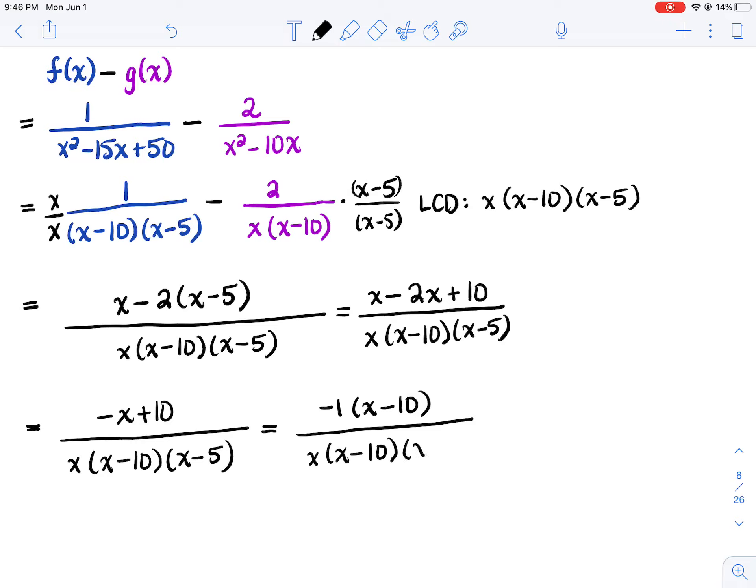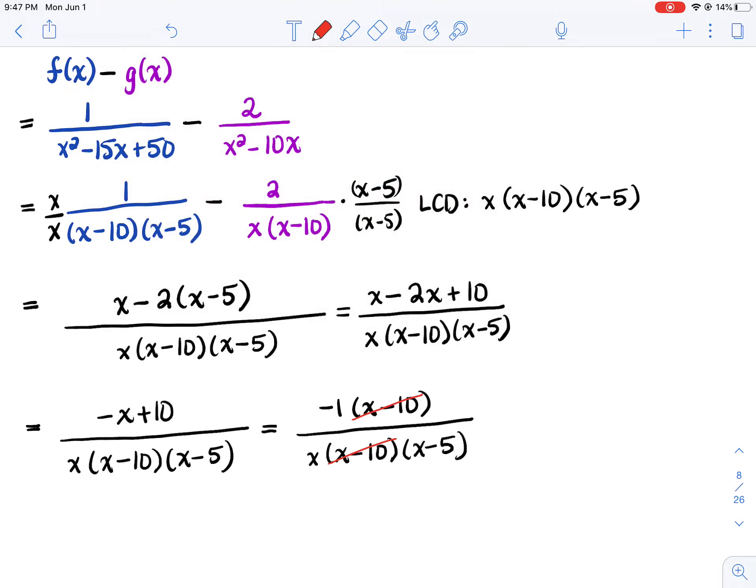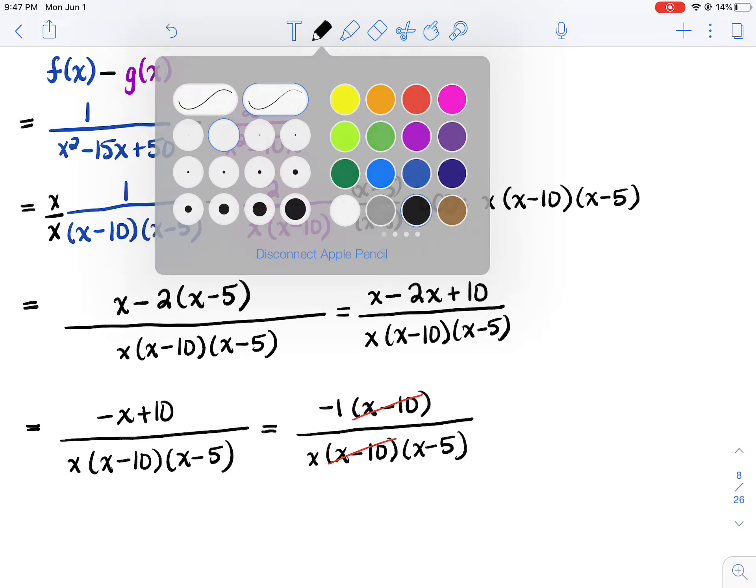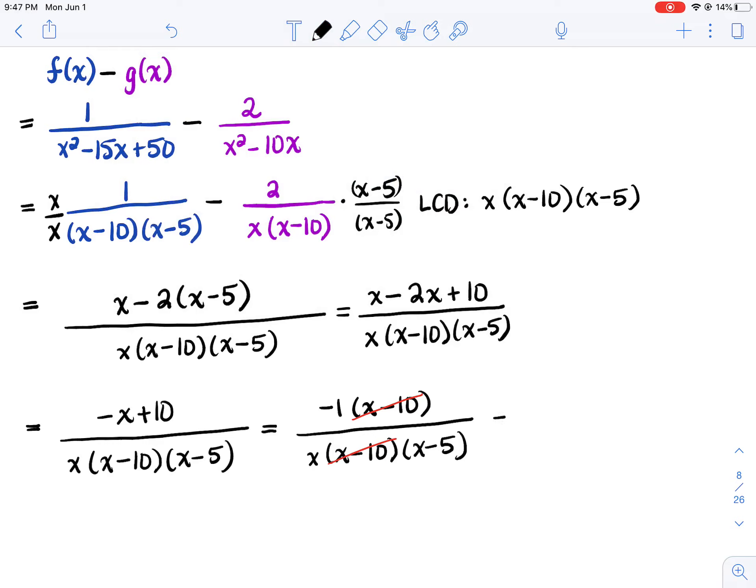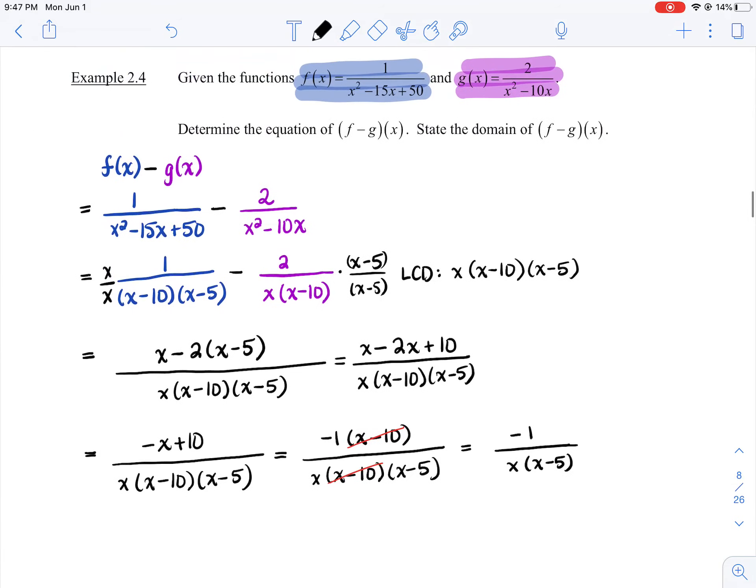Look at what math magic happens when you can factor that negative 1 out. When I factor that negative 1 out, do you guys see how the x minus 10s cancel out? So that means we've simplified it as best we can. So numerator, let's leave the negative 1. In the denominator, we'd have x times x minus 5. And there you have the difference function for f minus g.